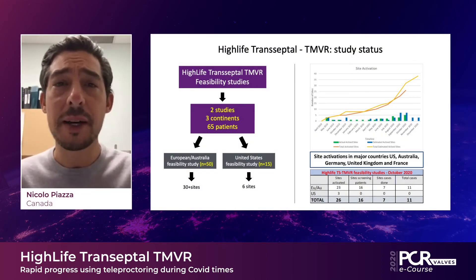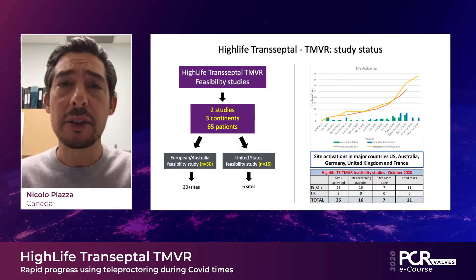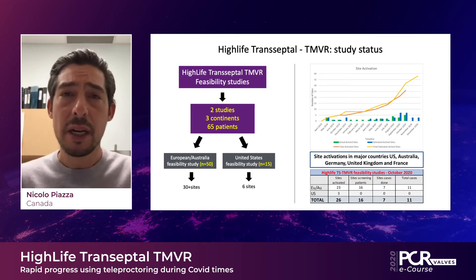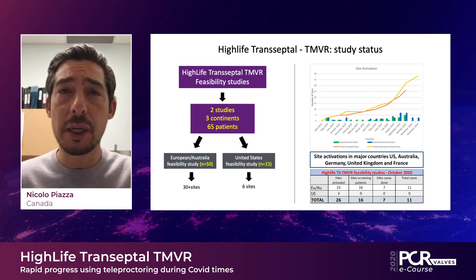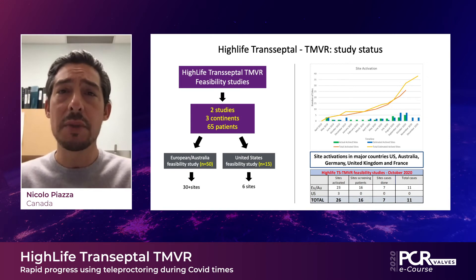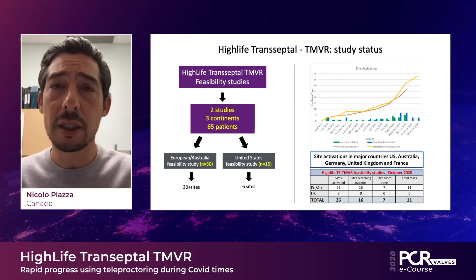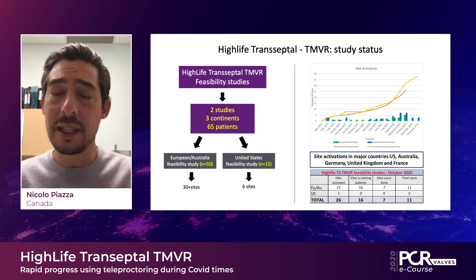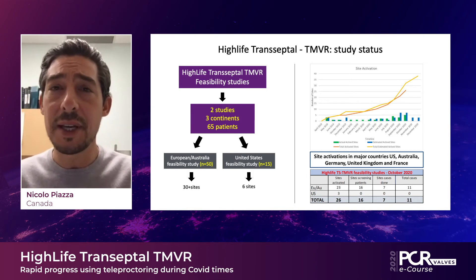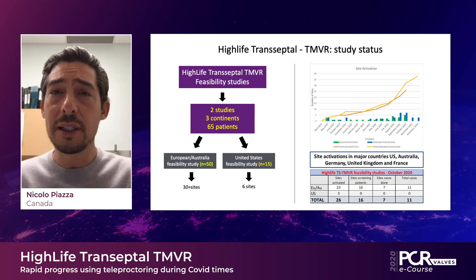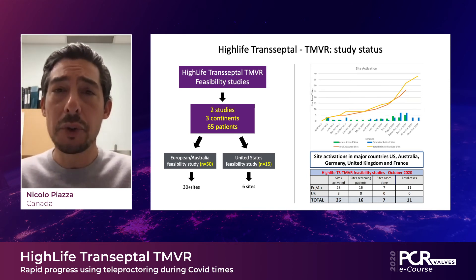In this next slide, we provide an update about the clinical study status of the HiLife transeptal system. There are two studies being conducted across three continents that will aim to enroll approximately 65 patients. In Europe and Australia, the aim is to enroll 50 patients across 30 plus sites. In the United States, an early feasibility study will aim to enroll 15 patients across approximately six sites. On the right side of the slide, you can appreciate the cadence of site activation across Europe, Australia, and the United States. There are currently 26 sites activated and a total of 11 transeptal HiLife cases that have been performed.